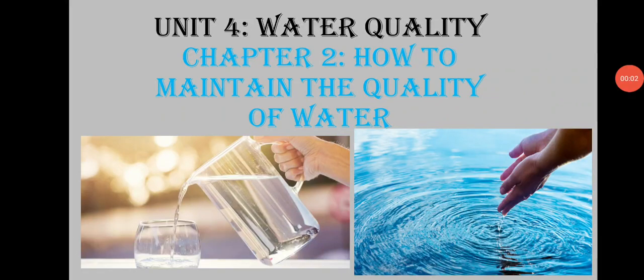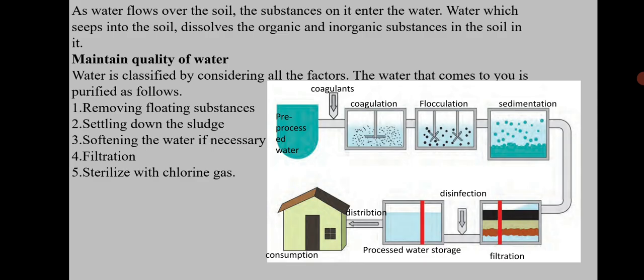Unit 4 Water Quality, Chapter 2: How to Maintain the Quality of Water. There are various sources of water available: running water in a river, rivulet, or canal; water in a dam; water from natural ponds; and the last one is groundwater.